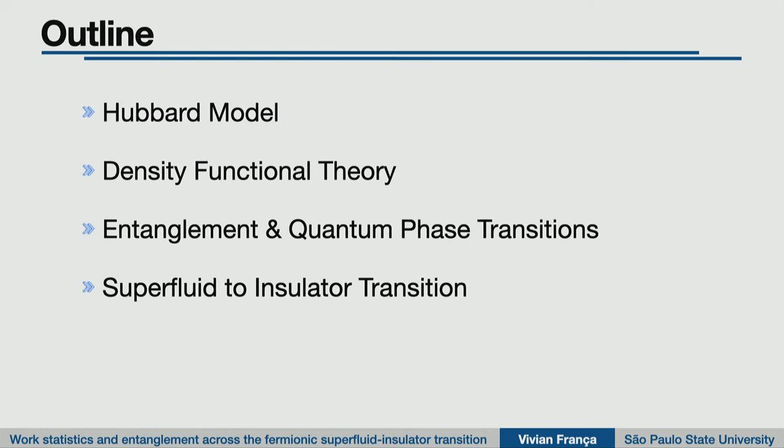First I will describe the system and the general idea about our system — the Hubbard model, the fermionic one. Then I will give a general idea of the methodology, namely density functional theory calculations. Then show general results of our group combining entanglement with quantum phase transitions, and finally come to this specific system and transition: the superfluid to insulator transition.